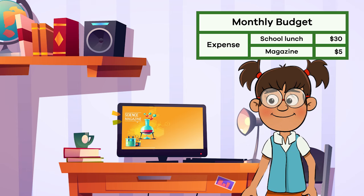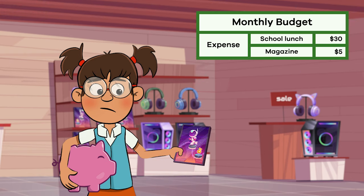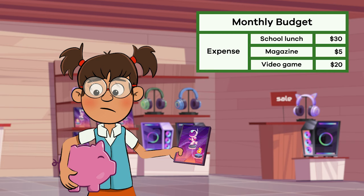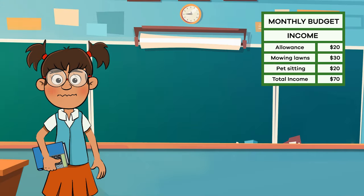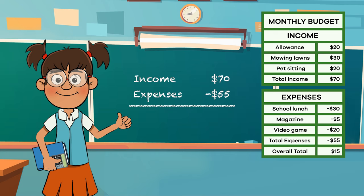This month, Frankie will spend $30 on school lunch, and she wants to spend $5 on a monthly online magazine subscription, but she also wants to buy a video game that costs $20. Will she have enough for the video game? Let's look at her budget and see. If we compare Frankie's income with her expenses, we see that she does in fact have enough money to buy the video game, with $15 to spare.